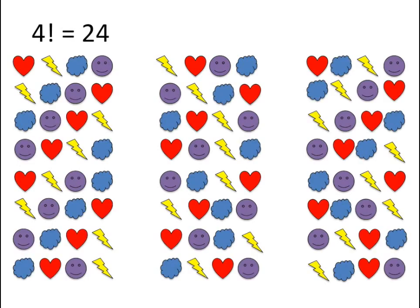For 4 objects, there are 4 factorial or 24 different unique arrangements.